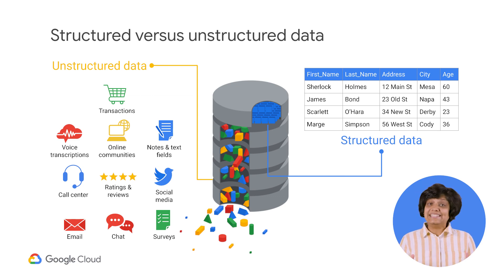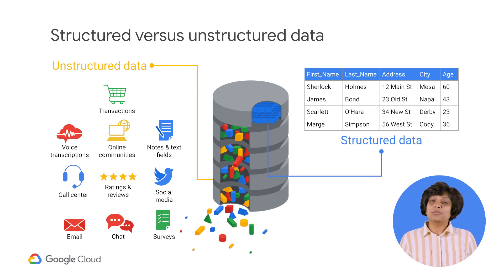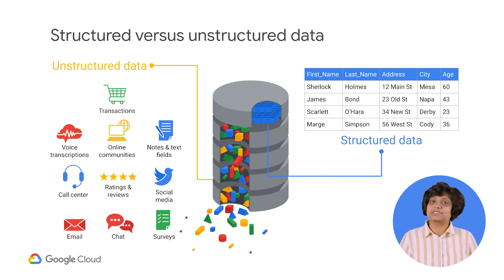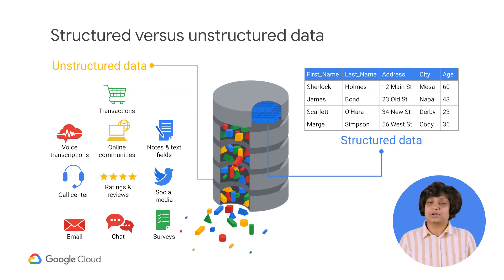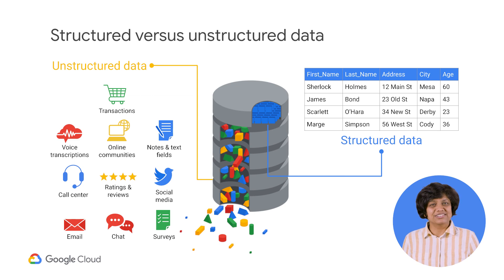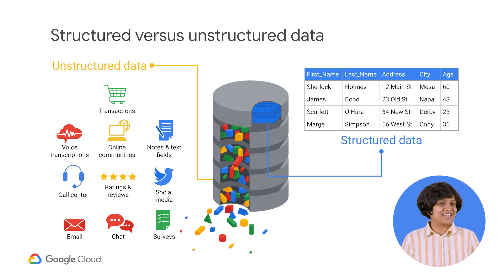It's estimated that around 80% of all data is unstructured. It's far more difficult to process or analyze unstructured data using traditional methods, as there's no internal identifier to enable search functions to identify it. Unstructured data often includes text and multimedia content — for example, email messages, documents, photos, videos, presentations, web pages, and so on. Organizations are focusing increasingly on mining unstructured data for insights that will provide them with a competitive edge.